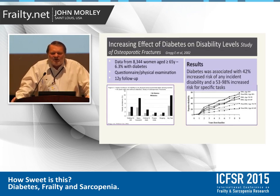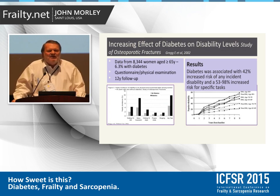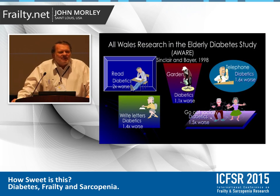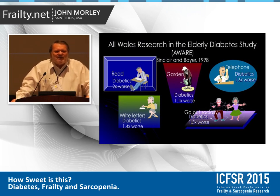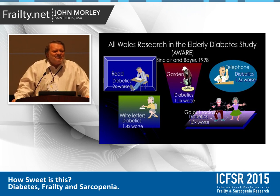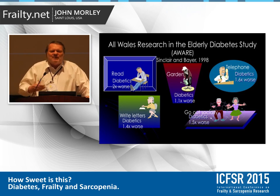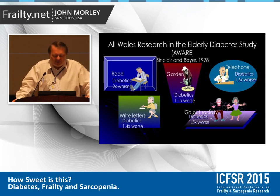This is another example — I think Dr. Sinclair will spend more time on this — showing that diabetes is associated with disability far more than you would expect in the community. Alan Sinclair, many years ago, did a phenomenal study where he asked geriatric-relevant questions about activities of daily living. He asked diabetics: could you read? They were two times worse. Could they garden? Worse. Could they write letters? Worse. Could they go out? Worse. Could they use the telephone? Worse. This is a great example of the huge impacts you can make on a population.